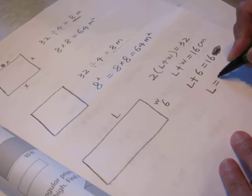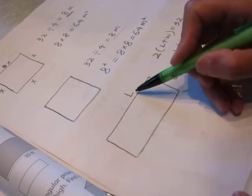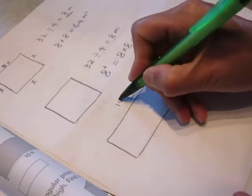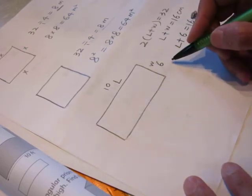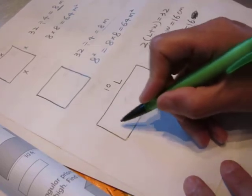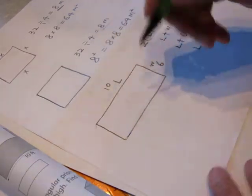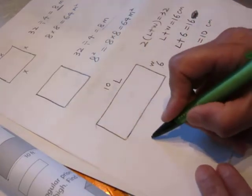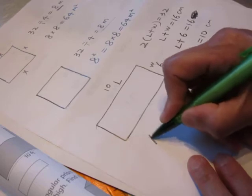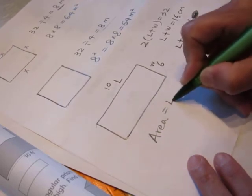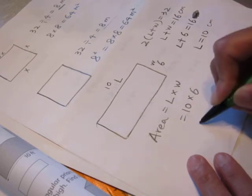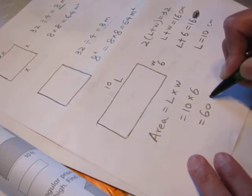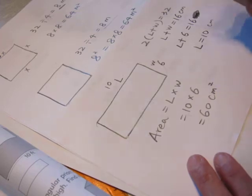So length equal to 10 centimeter. So now we find the length is 10, and the area, for rectangular, the area. The area is area equal length times width equal 10 times 6, equal to 60 centimeter square.